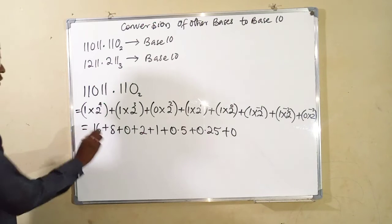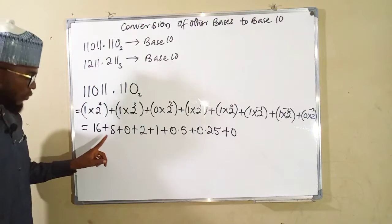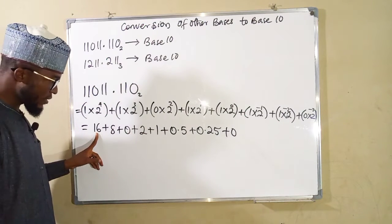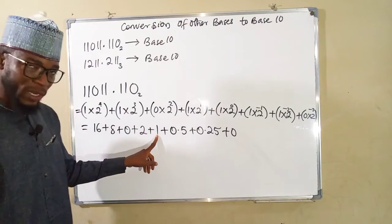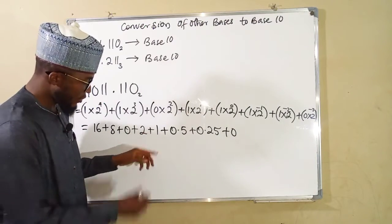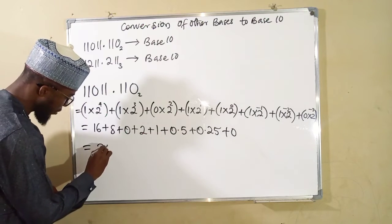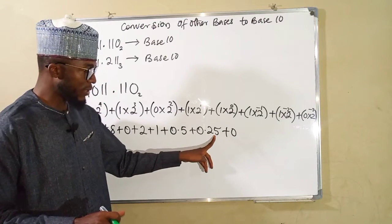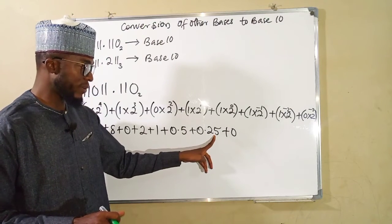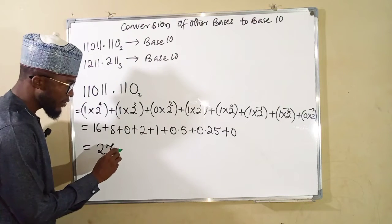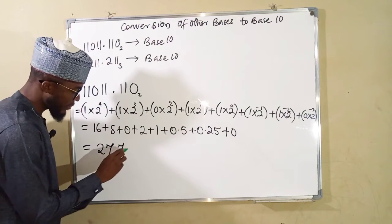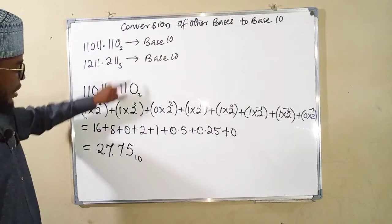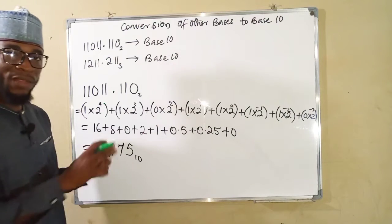Now let us add. We have 8 plus 2 is 10, and 10 plus 16 is 26. 26 plus 1 is 27. So we have 27. Then 0.5 plus 0.25 is 0.75, plus 0 is the same thing as 0.75. So we have 27.75 in base 10. This means that this number in base 2 and this number in base 10 are exactly the same, just with different bases.